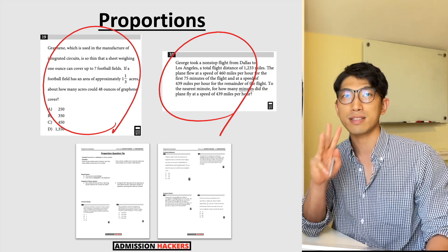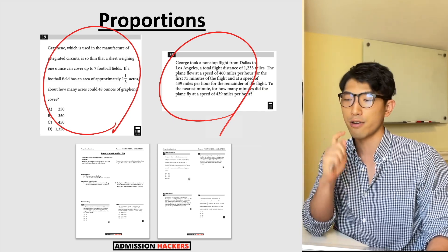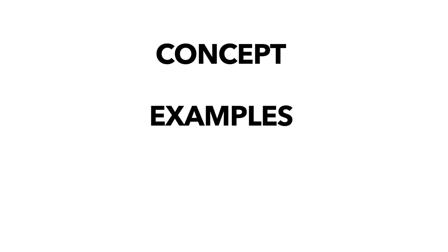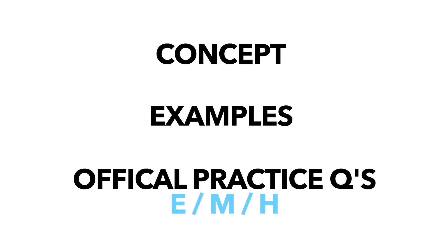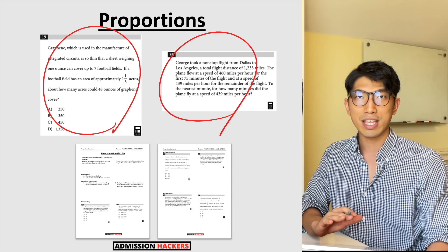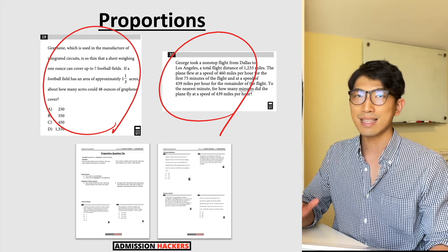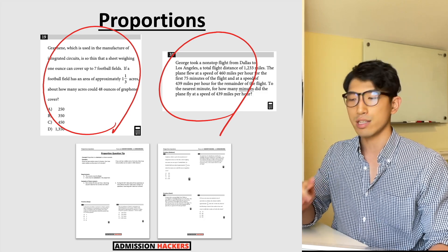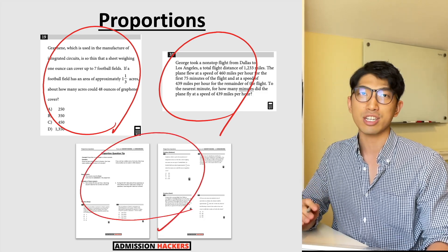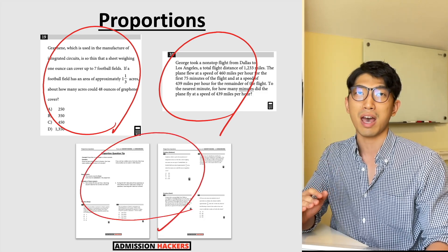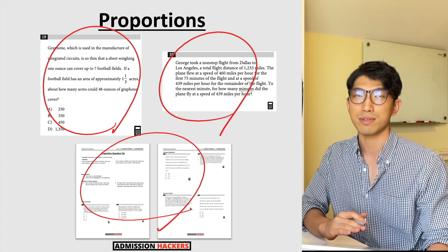We're going to go over this in a three-step process. First, we'll talk about the concept. Second, we'll talk about the examples. And third, we'll go over some official College Board practice exam questions that are easy, medium, and hard in difficulty. Everything we cover will be organized into a two-page worksheet, which will also have an additional set of practice problems.